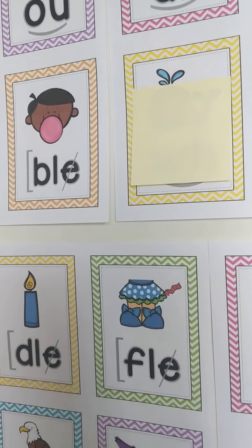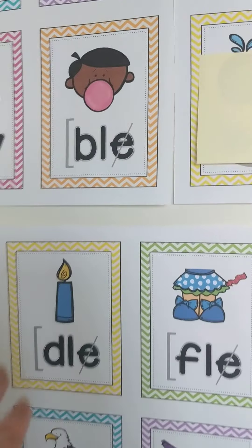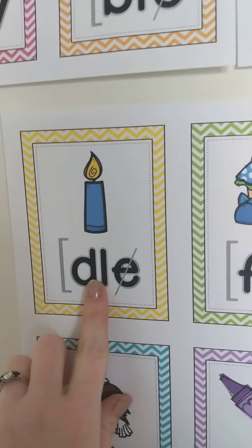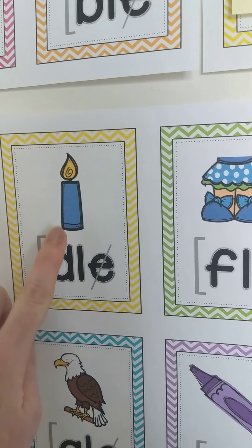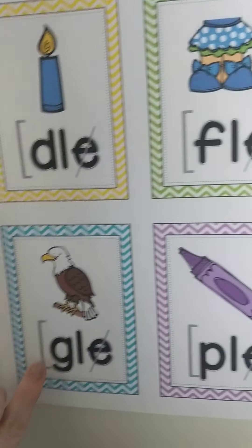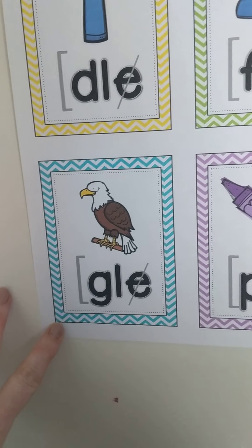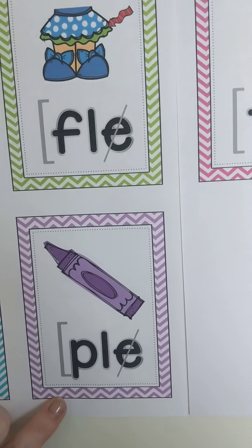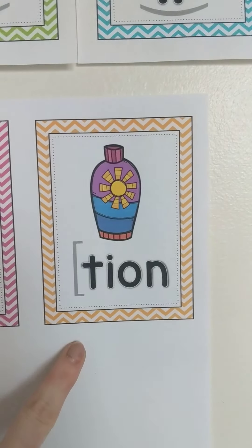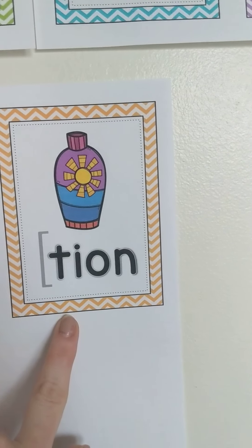So now that we went over those, we're going to go over our final stable syllables. Remember, these come at the end of a word and they're the last sound — this is why they're called final stable syllables. We have: B-L-E, bubble, bul. D-L-E, candle, dl. F-L-E, ruffle, ful. G-L-E, eagle, gl. P-L-E, purple, pul. T-L-E, bottle, tul. T-I-O-N, lotion, shun.